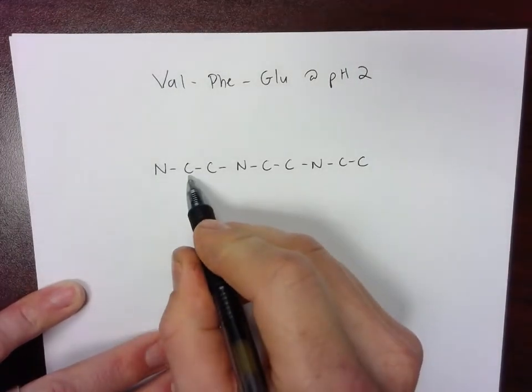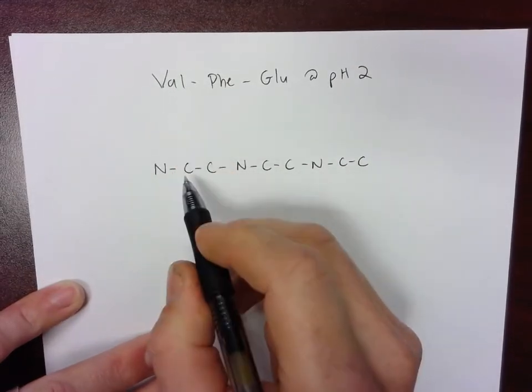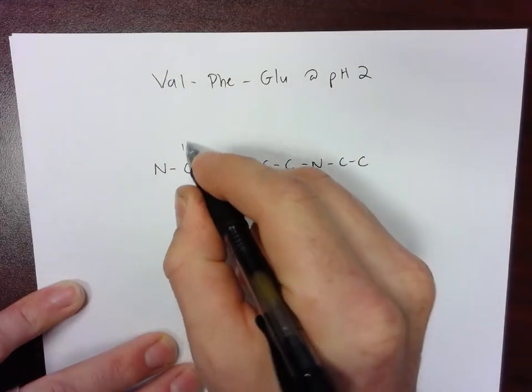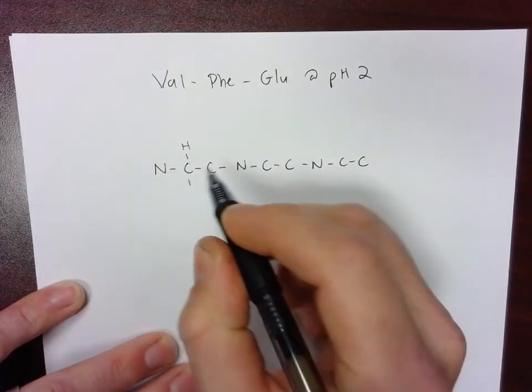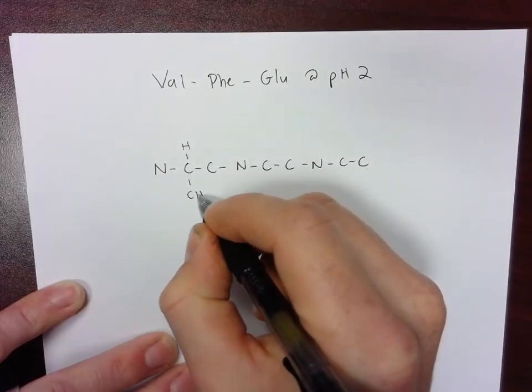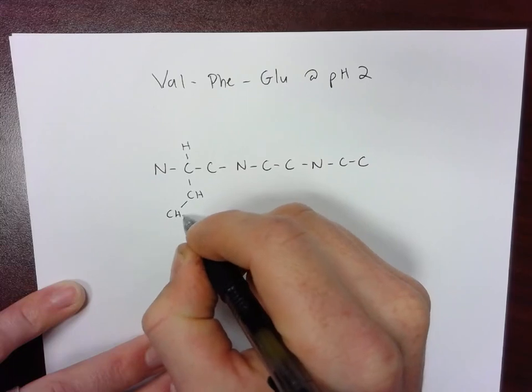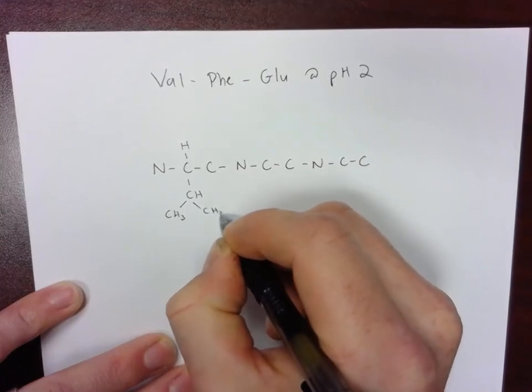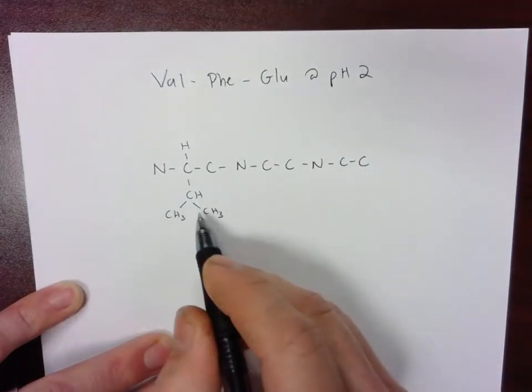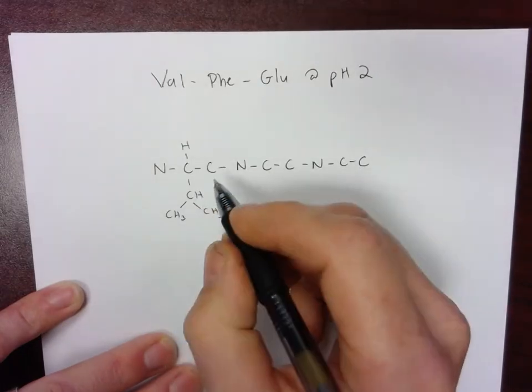So this is the alpha carbon for the first amino acid, which is valine. I know there's a hydrogen coming off of every alpha carbon, and then valine is going to be CH, CH3, CH3. Two CH3s coming off of a CH. That's the R group.